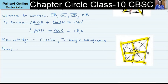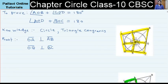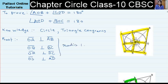In this figure, radius OP is perpendicular to tangent AB. Radius OQ is perpendicular to tangent BC. Radius OS is perpendicular to tangent AD. The reason is that a radius is always perpendicular to the tangent.